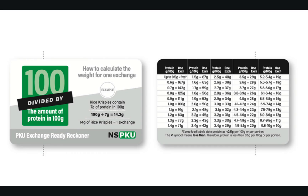If you don't want to do the calculation all the time, you can use ready reckoners — this one is by the NSPKU. So if your food label shows 3.7 grams of protein per 100 grams, you would look it up and see that you need to weigh out 27 grams of that product to equal one exchange.